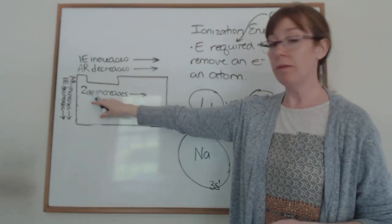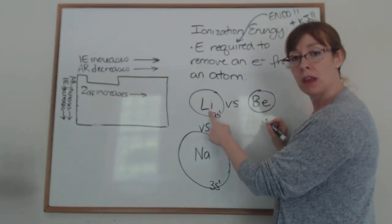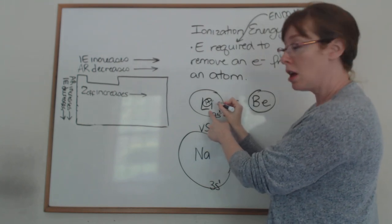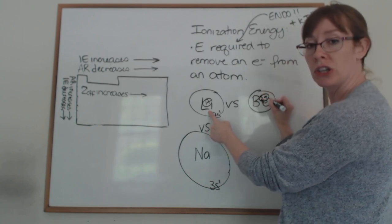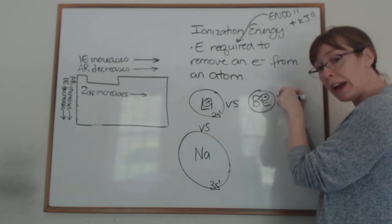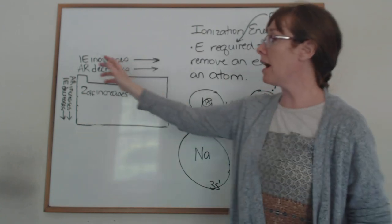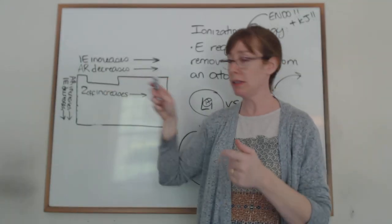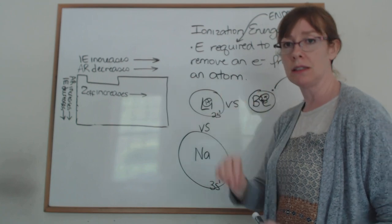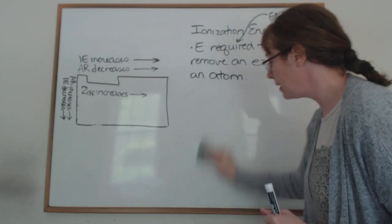For the across trend, use the same effective nuclear charge reasoning: lithium's Zeff is +1, beryllium's Zeff is +2. Beryllium's nucleus pulls tighter on its outer electrons, so you must provide more energy to remove one. The ionization energy increases going across because Zeff increases — same reasoning as atomic radius, just the opposite direction of change.